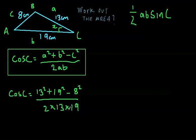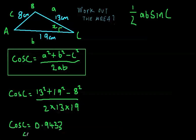So if we just slot that into our calculator, we will get cos of C equals 0.9433. And the inverse of that, we're going to get angle C is going to be 19.4 degrees. So that's the inverse of this equals 19.4. Now we know this angle is 19.4.